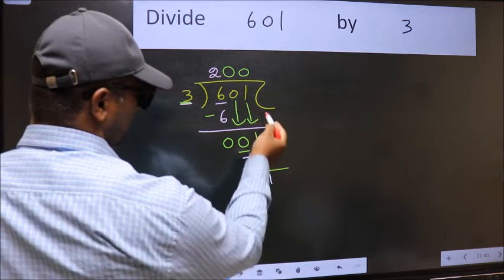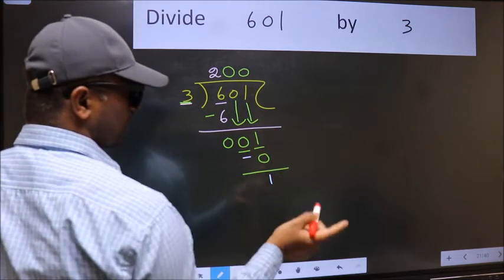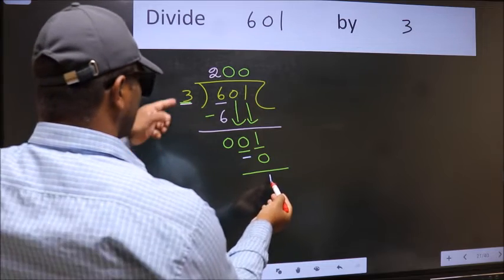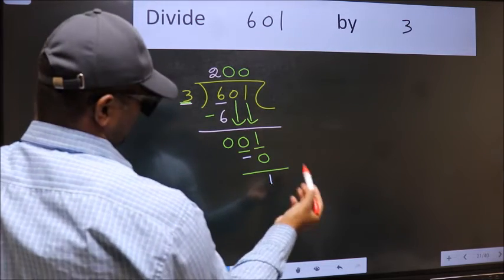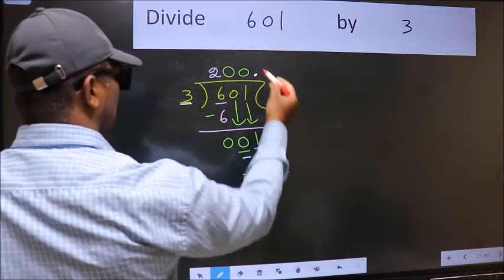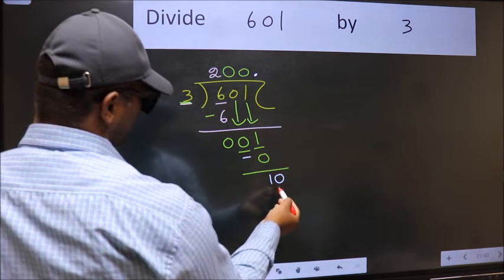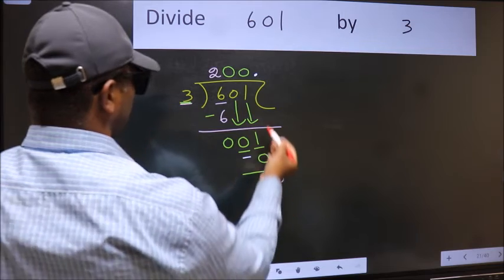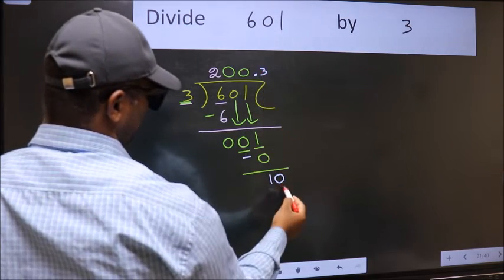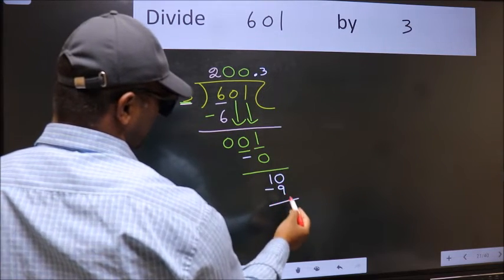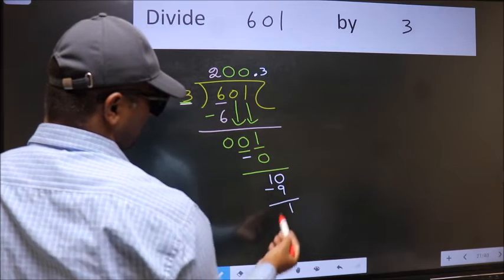Over here, we did not bring any number down, and 1 is smaller than 3. So now we can put dot and take 0. So 10. A number close to 10 in 3 table is 3 times 3 is 9. We should subtract. We got 1 again.